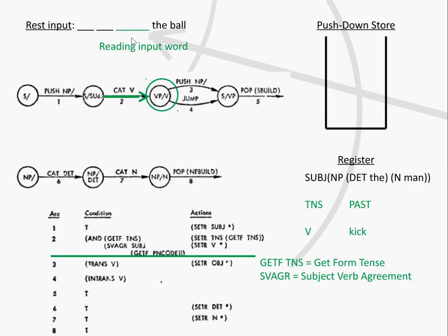Then we are reading the next input word, which was 'kicked'. We take that transition and go into that state. The condition for this transition says we can only take it if the word is in past tense form. The automaton looks up 'kicked' in the dictionary. The next condition is that we have subject-verb agreement, so the forms have to match. Then the verb according to its tense is stored in the register.